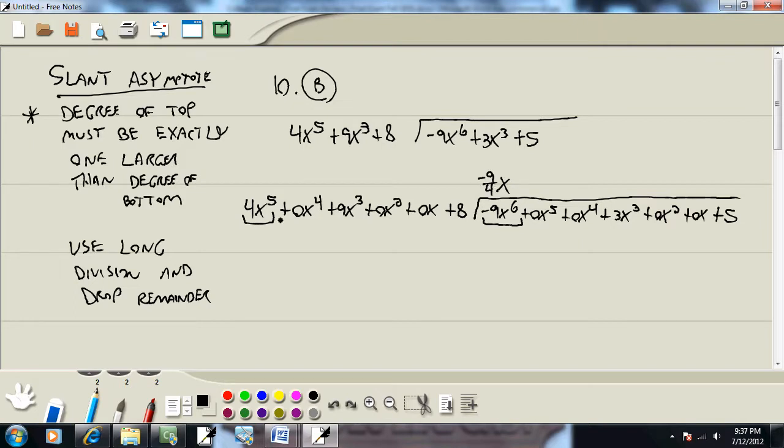If I multiply this out, negative 9 fourths x times 4x to the fifth, the 4s cancel, that gives me negative 9x to the sixth. Negative 9 fourths x times 0x to the fourth gives me 0x to the fifth. Negative 9 fourths x times this 9, that's nasty, gives us negative 81 fourths x to the fourth. Then 0x to the third, 0x squared, and negative 72 fourths. Now we're going to subtract that line, which means we'll flip the signs.